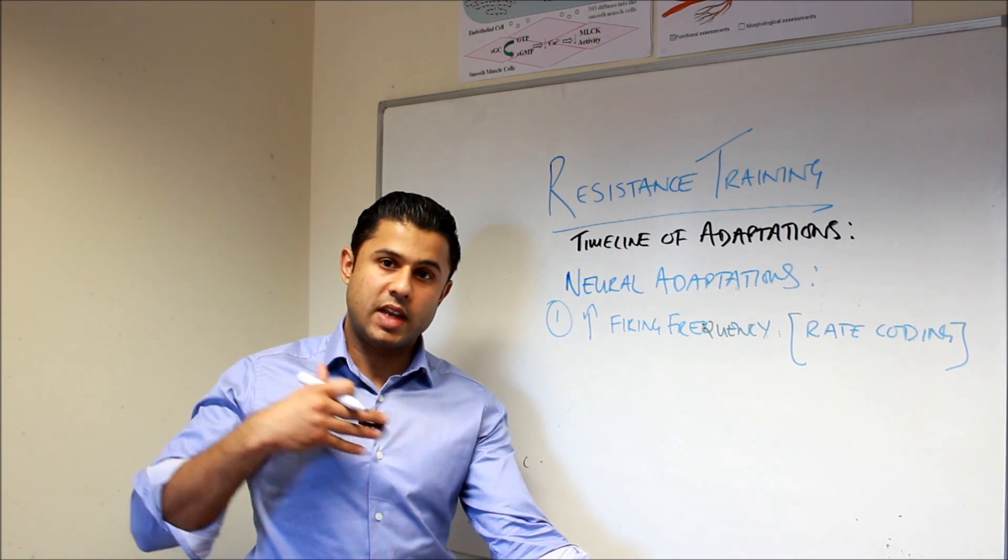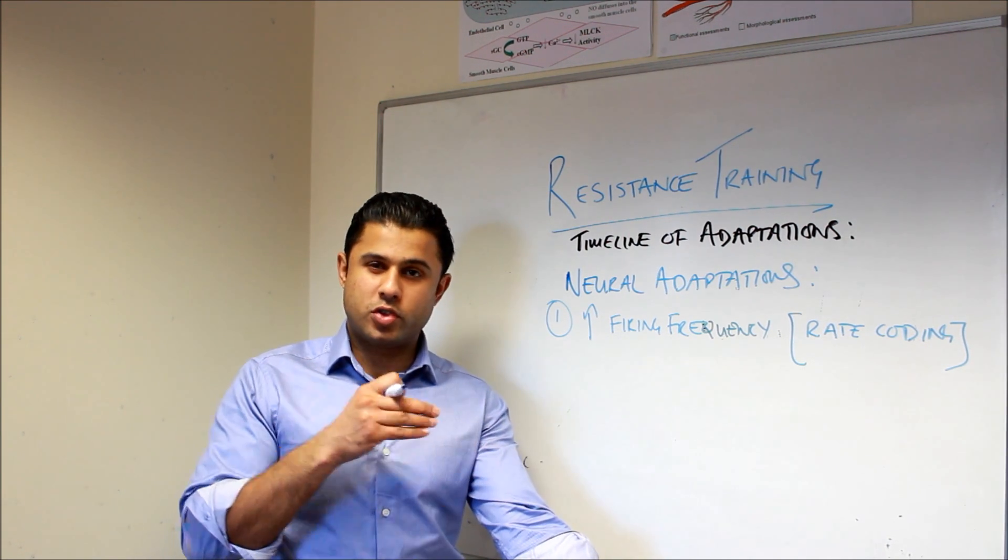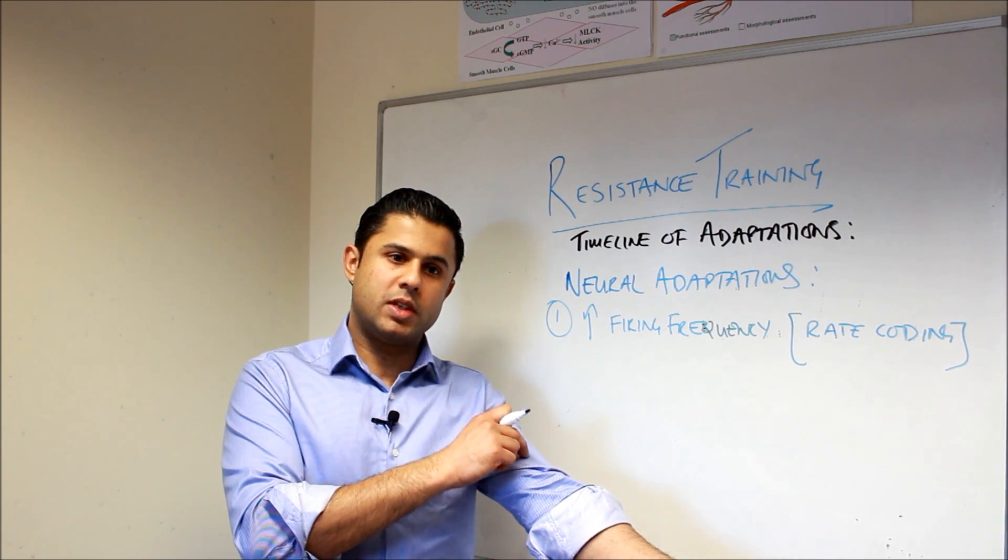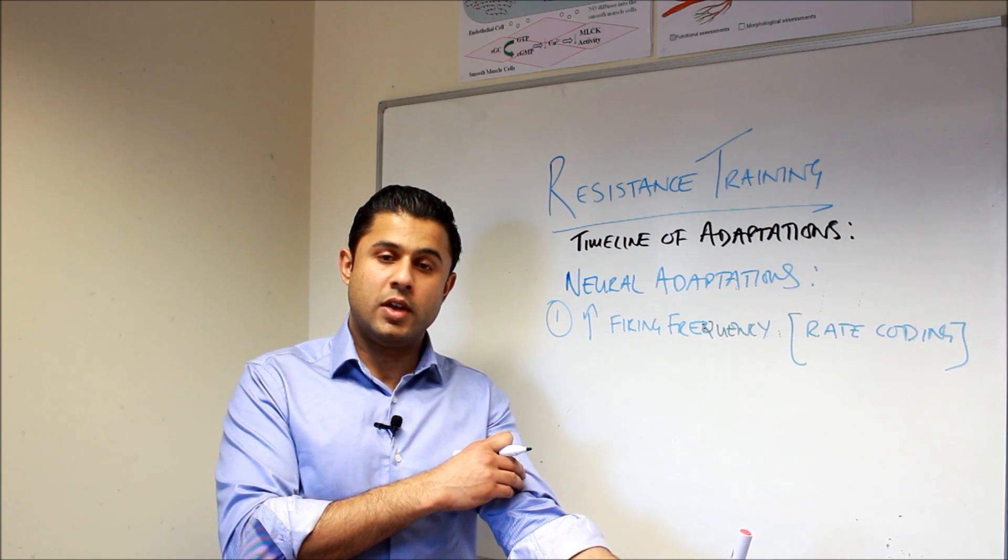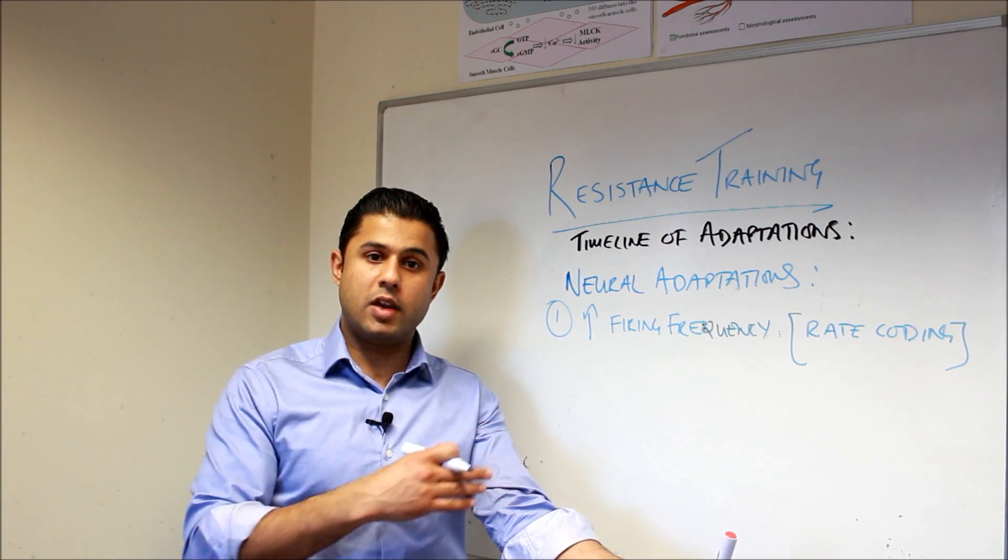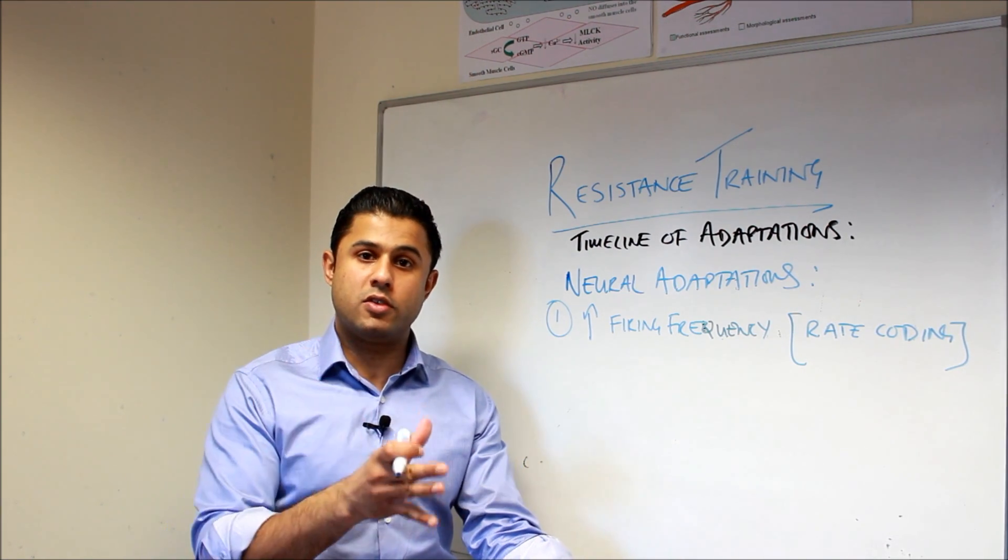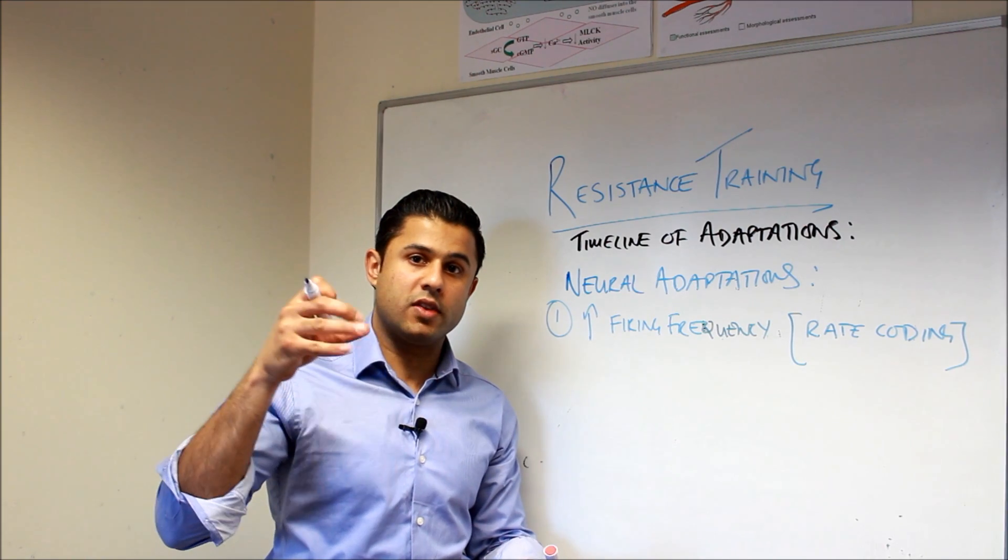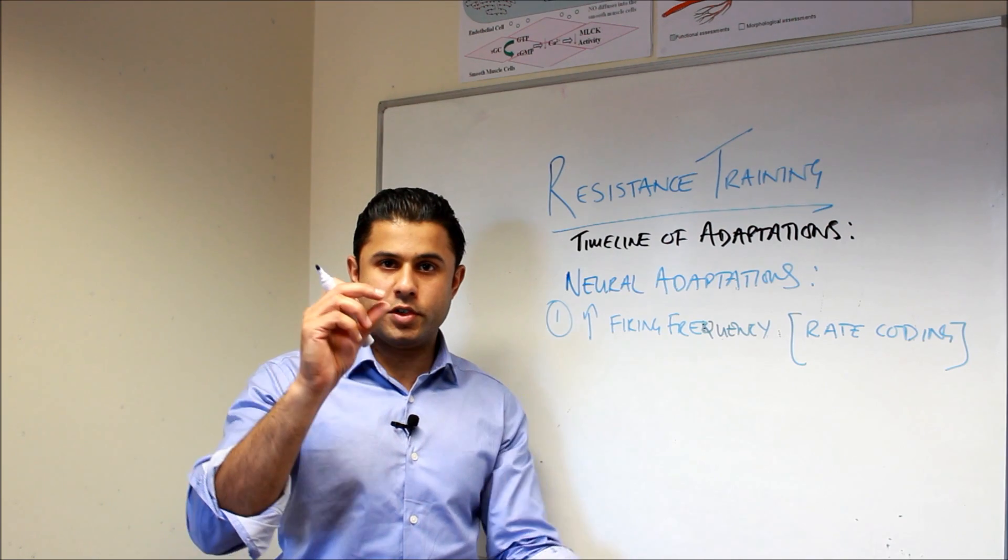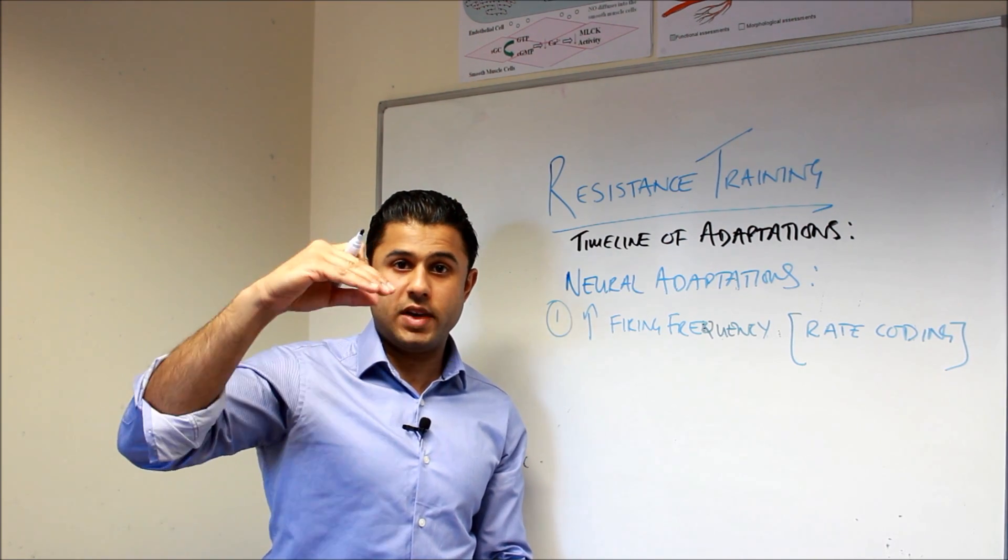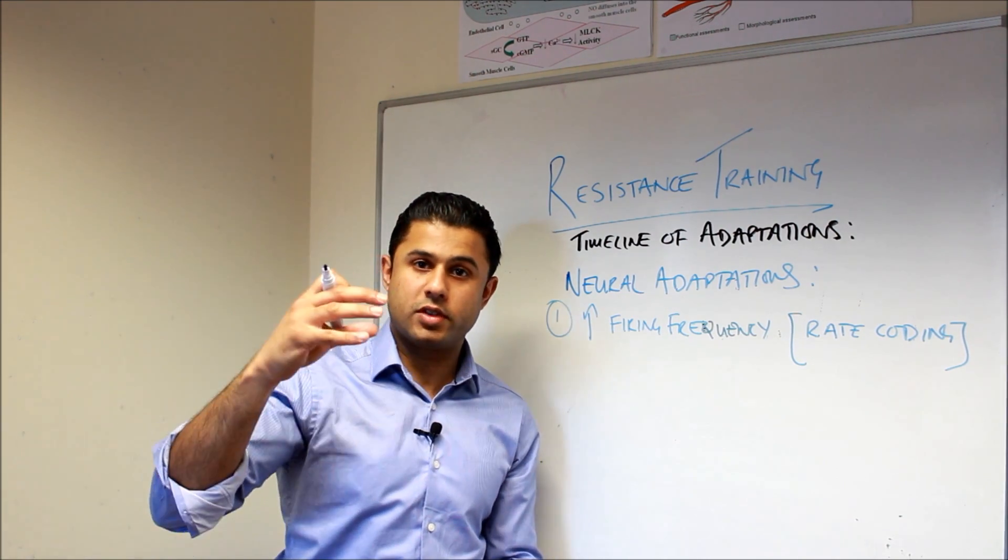So let's explain what rate coding or increased firing frequency is. Now, if there was a single electrical stimulus going to the motor unit in my muscle, the muscle would exhibit what is known as a twitch. Now if there was a second electrical stimulus going at the same time, or just shortly afterwards, so that the first electrical stimulus is still causing the twitch, but the second one comes along, then we're going to get a greater contraction. And then if we have a third signal coming through, then we're going to get this cumulative effect.